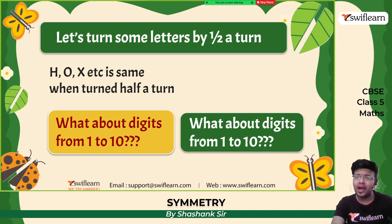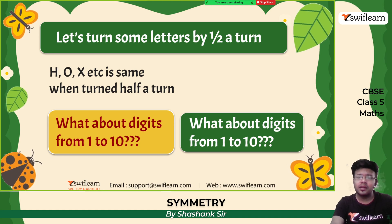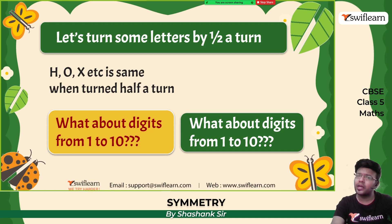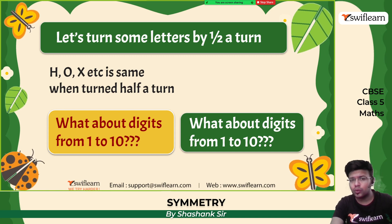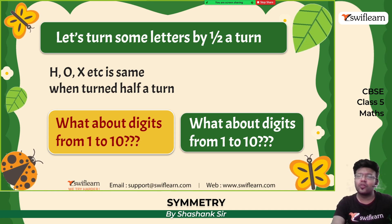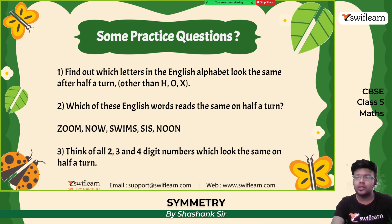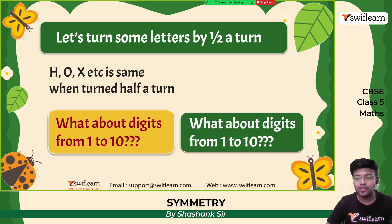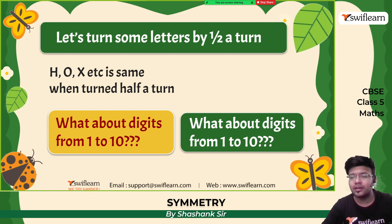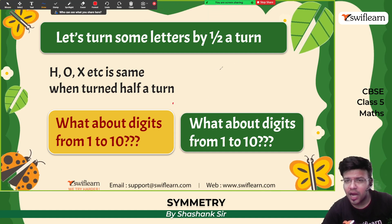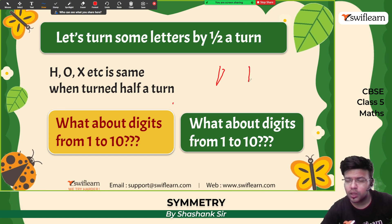Now let us turn some letters by half turn. Letters such as X, O, and H look the same when turned by half turn — rotated by 180 degrees, you still get H, you still get O, you still get X. What about the digits from 1 to 10? When 1 is written vertical without any dash and rotated by a half turn, it still will be 1.